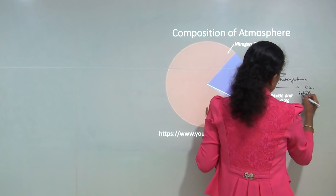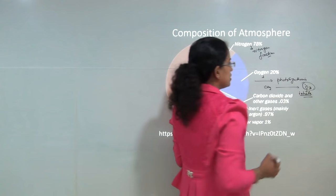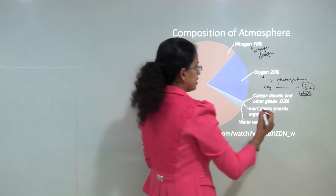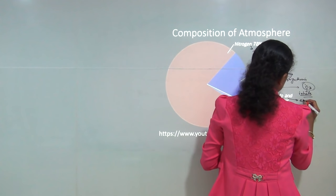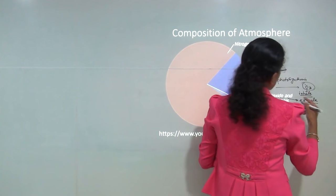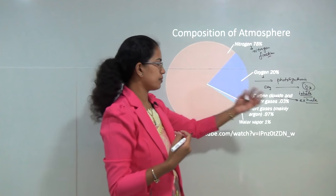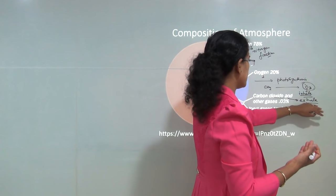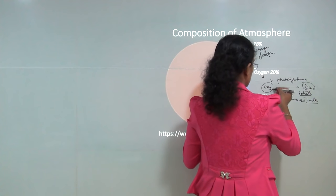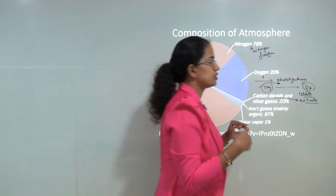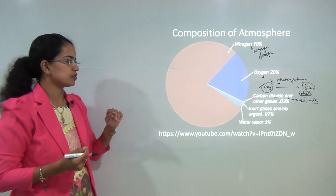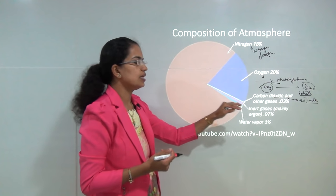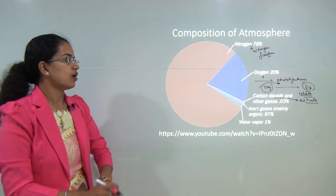We inhale oxygen, and this is important for survival or respiratory activity. Next comes carbon dioxide — what we exhale is carbon dioxide, and this carbon dioxide that we exhale is used by plants again for the process of photosynthesis to release free oxygen into the atmosphere. So this is how carbon dioxide, oxygen, and nitrogen are important constituents of the atmosphere.